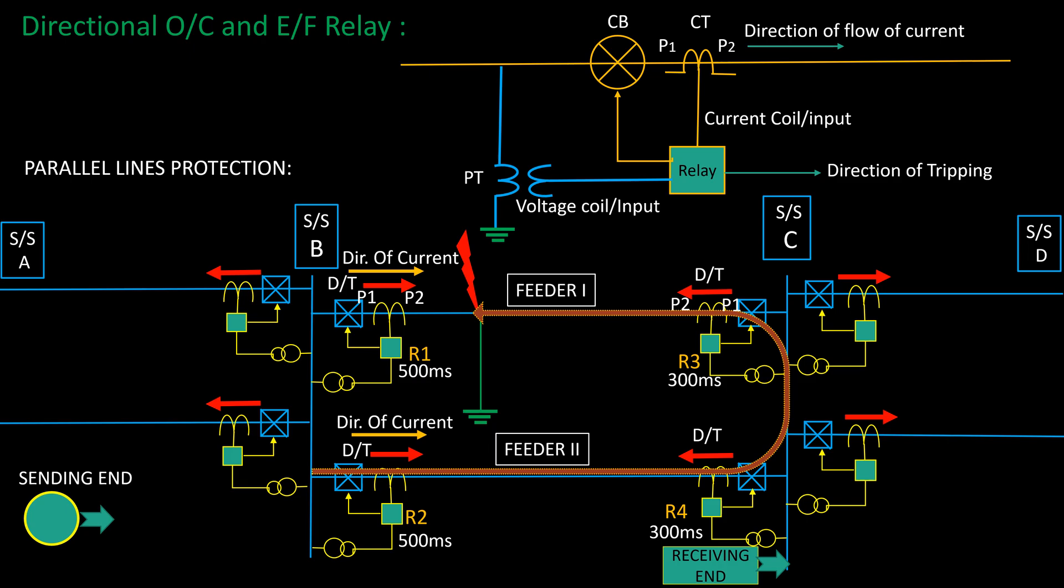Not only that, relay R2 will also experience same fault current, and here direction of tripping and direction of flow of fault current is same. Thus, the relay R2 will issue a tripping of its circuit breaker.